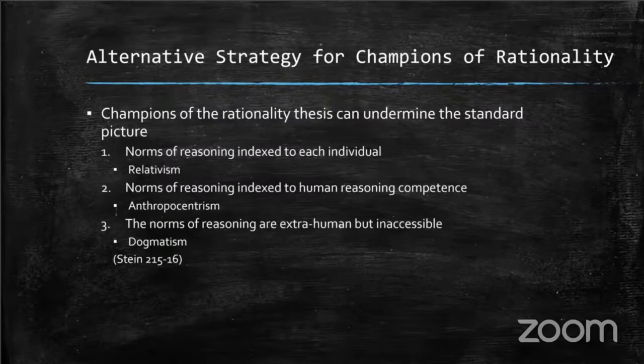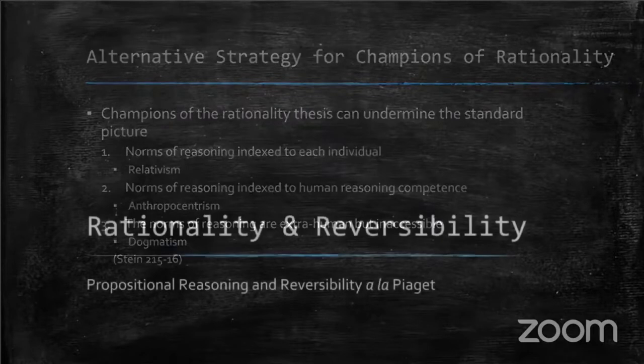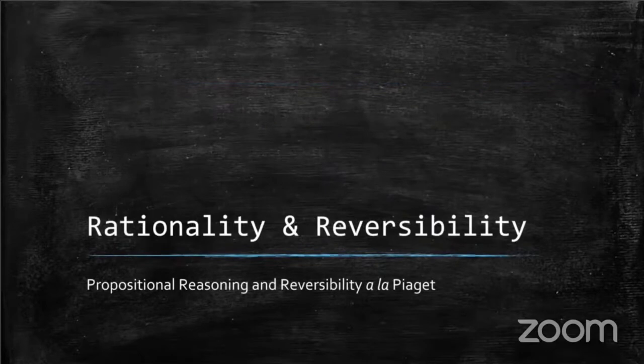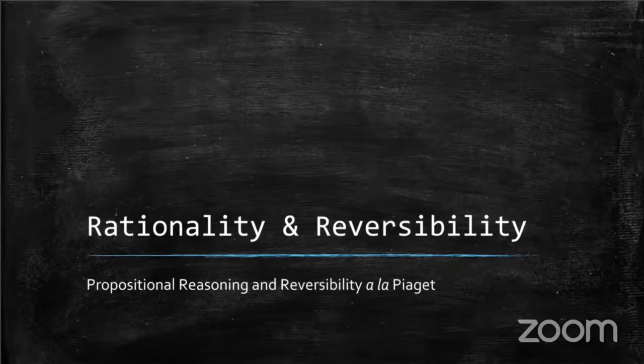The consequences of these three arguments are relativism, anthropocentrism, and dogmatism respectively. In Part Two, I will illustrate propositional reasoning and reversibility according to Piaget and argue that it corresponds to the second alternative strategy — denying that normative principles of reasoning can diverge from human reasoning competence.